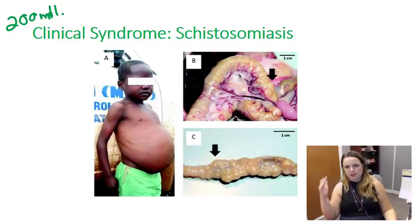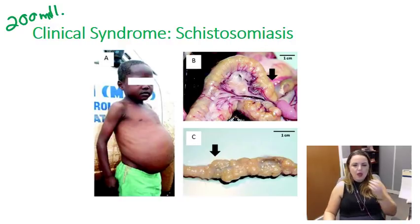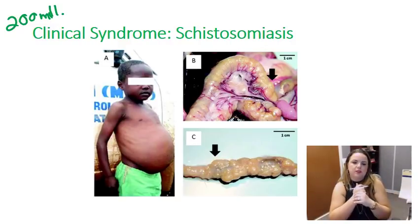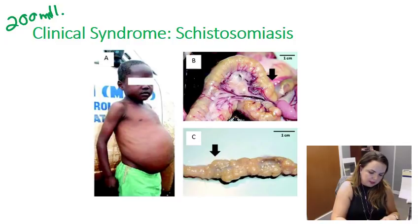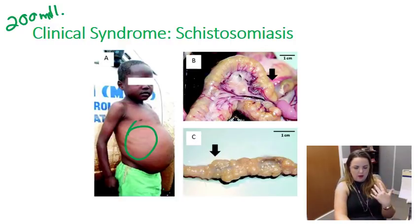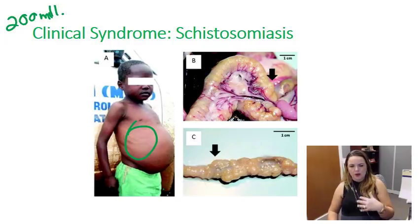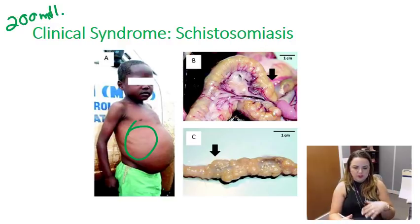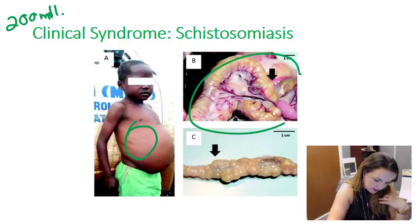Over the course of years, as patients have repeated significant intense immune responses to the worms, they develop hepatosplenomegaly — as shown here, where the entire abdominal cavity is visibly swollen. You'd also see lymphadenopathy, squamous cell bladder carcinoma is common, transverse myelitis, and cirrhosis. You can also have some colitis, as shown in these images.